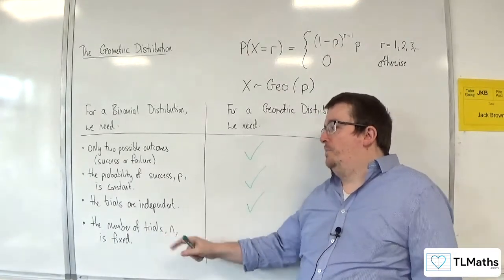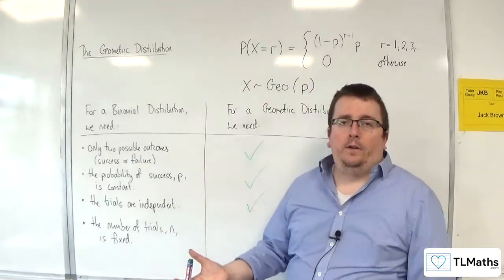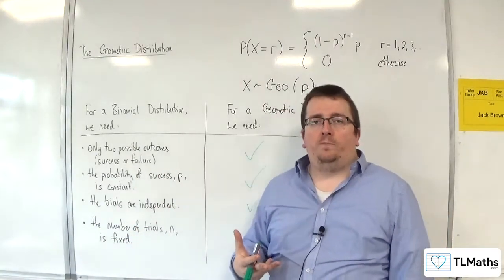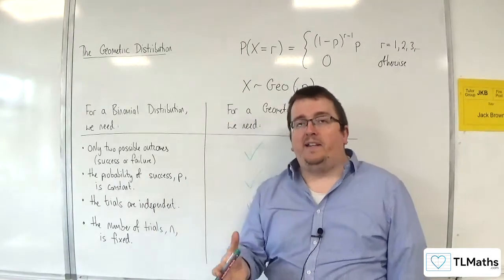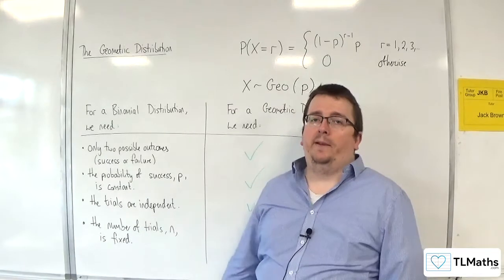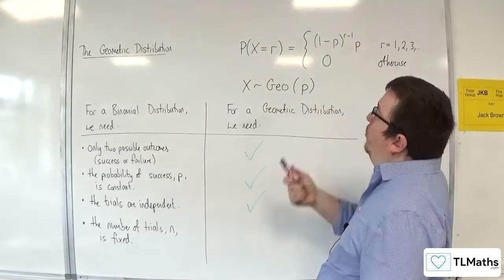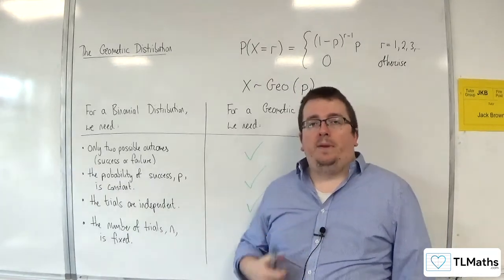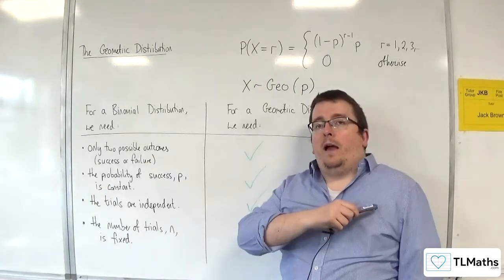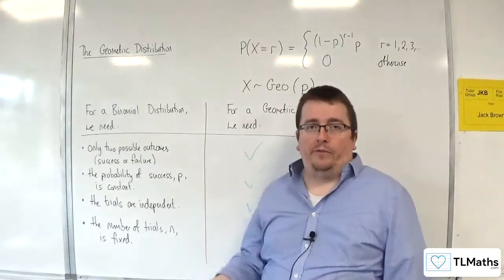Now, the binomial distribution requires—because it's got one of its parameters as n—when you write down the binomial distribution, you say X is binomially distributed with n number of trials and P as the probability. But for a geometric distribution, there is only one parameter, P, because you can use the geometric distribution to look at however many trials you want.